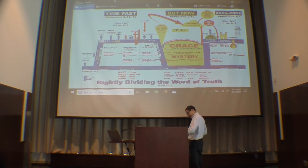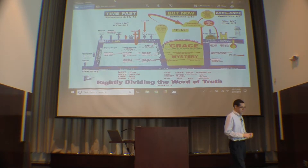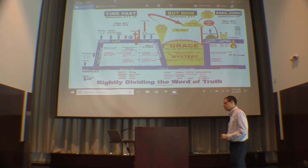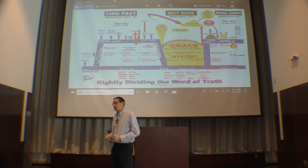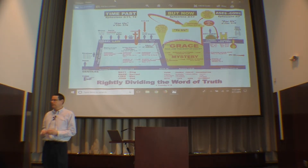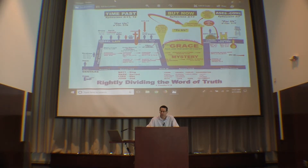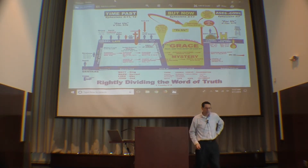Look with me at Ephesians 3. Ephesians 3 is a profound chapter. I'll suggest to you Ephesians 3 proves that Paul had new information that was never previously known — it had never previously been revealed. Ephesians 3 verse 1: 'For this cause I, Paul, the prisoner of Jesus Christ for you Gentiles.' Peter could never have said that. Verse 2: 'If you have heard of the dispensation of the grace of God, which is given me to you.'